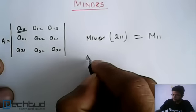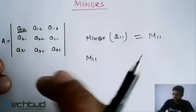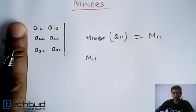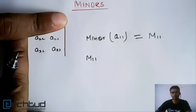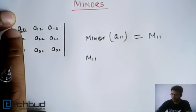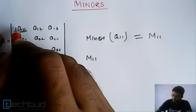What will be M11? When we consider M11, we will hide this first column and first row, and the remaining determinant will be the minor of this element M11. So what we are going to do is we are going to hide this column and we are going to hide this row.